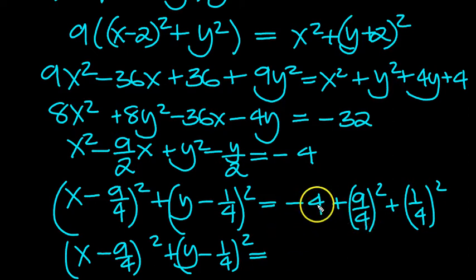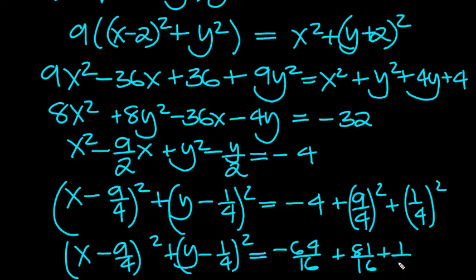This is going to be 16 so this will be minus 64 over 16 plus 81 over 16 isn't it? 9 squared is 81 plus 1 over 16.